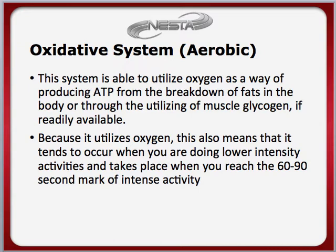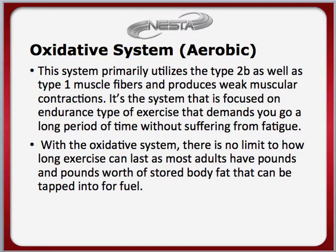And you see that a lot with metabolic training — that's how we set it up, so that you have high intensity, you get a little rest to restore, and then you go back to another high intensity session. The oxidative system primarily uses type 2B as well as type 1 muscle fibers, and produces weak muscular contractions. It's a system focused on endurance type exercises that demand you to go for a long period of time without suffering fatigue. With the oxidative system, there is no limit to how long exercise can last, as most adults have pounds and pounds of fat stored in the body that can be tapped for fuel. Remember, it's very possible to combine energy systems in one workout by simply adjusting your protocol and moderating the rest and work periods being utilized.